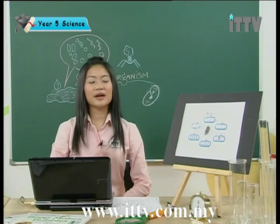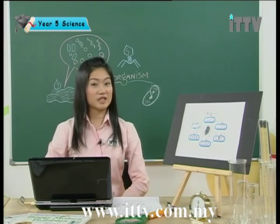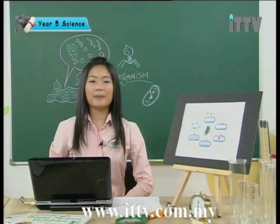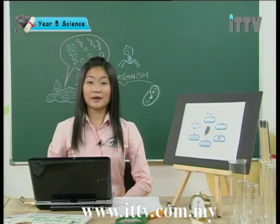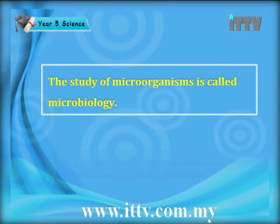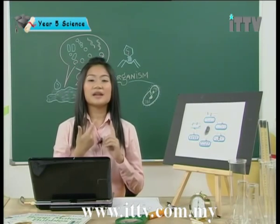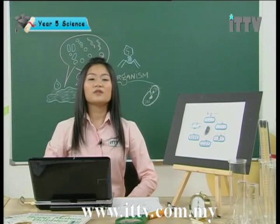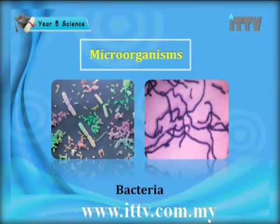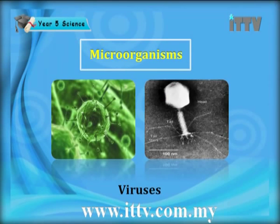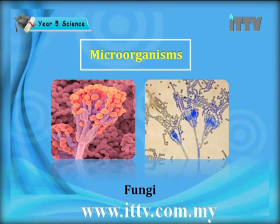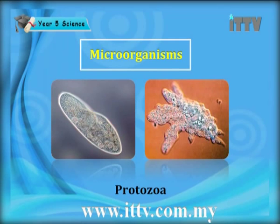I'm going to introduce to you the various types of microorganisms which exist on Earth. When we study microorganisms, we study microbiology — the study of microorganisms is called microbiology. Microorganisms are categorized into different categories: there are bacteria, there are viruses, there are protozoa, and there are also fungi, yeast, or mold. Here you can see bacteria, viruses, examples of fungi or mold, and protozoa.